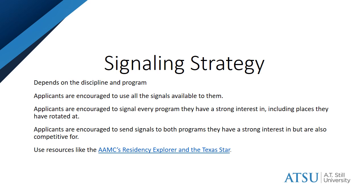Early reports on program signaling in previous match cycles have indicated that a minority of programs — those perceived as the most competitive — have received a majority of program signals. We advise that, just as with your applications, you spread your signals out to a range of programs. Spend some on your reach programs and some on programs that you think you are likely to receive interest from. Using all of your signals on high-profile programs is probably not to your advantage.